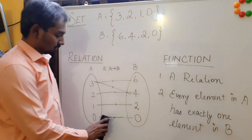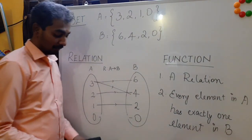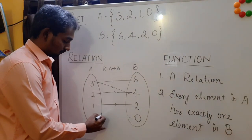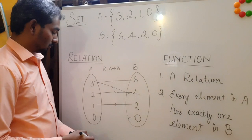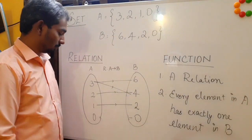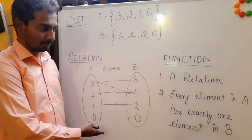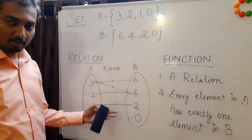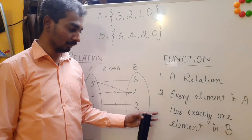Similarly, this is also not a valid function but is a valid relation because elements in A are left out without having any association with elements in B. So this is a valid relation but not a valid function. Hence, a function is a relation — a stricter relation in which every element in A has exactly one element in B.